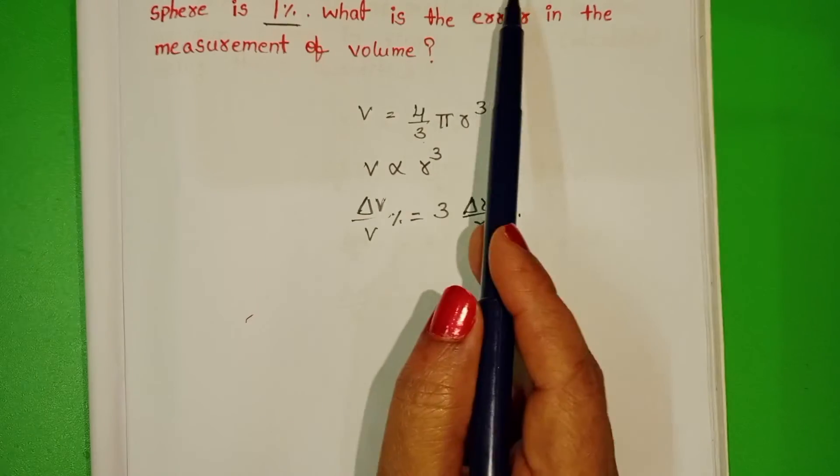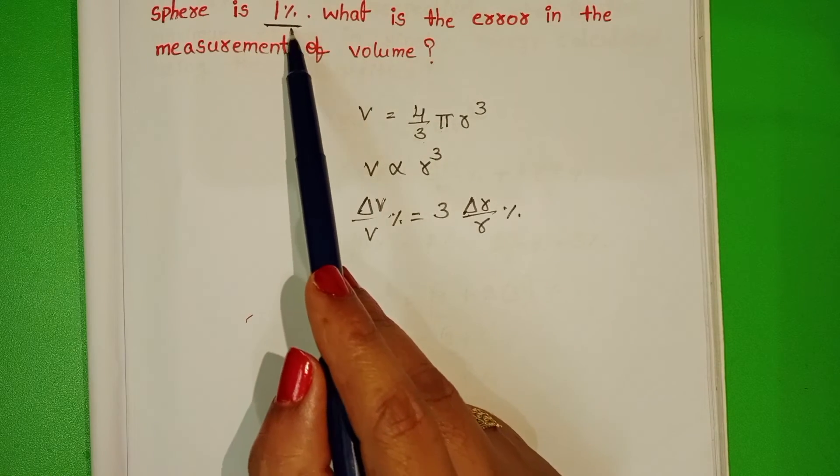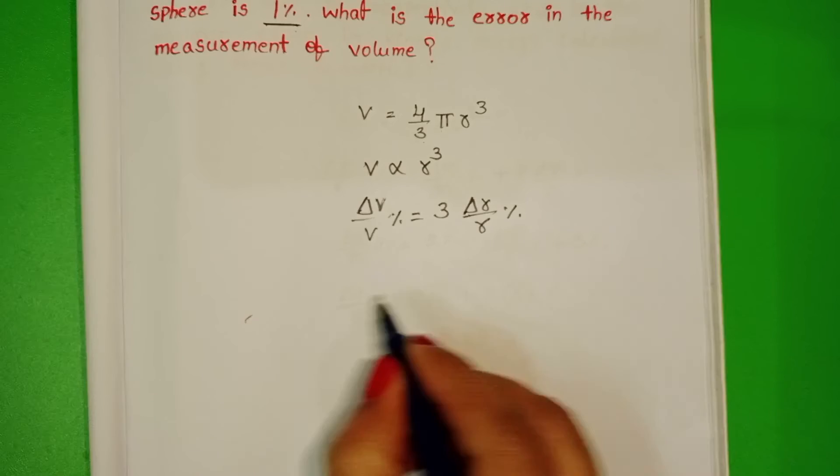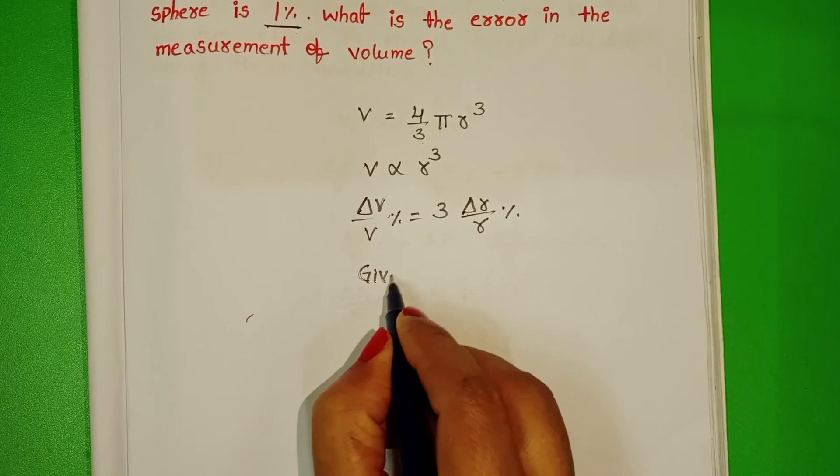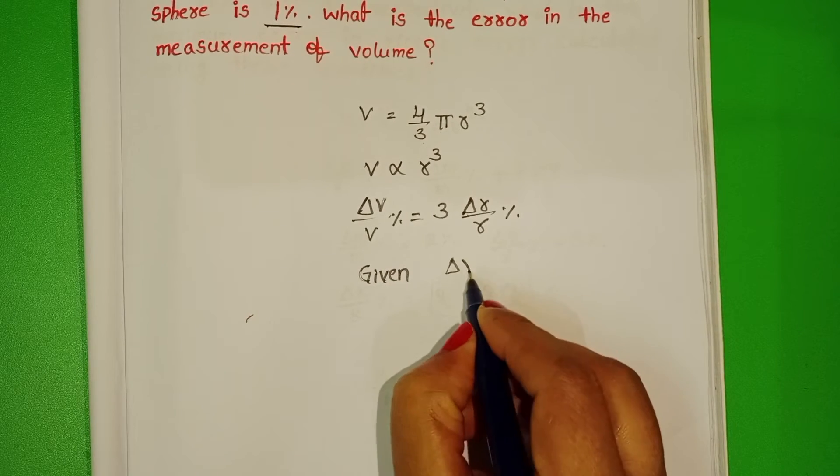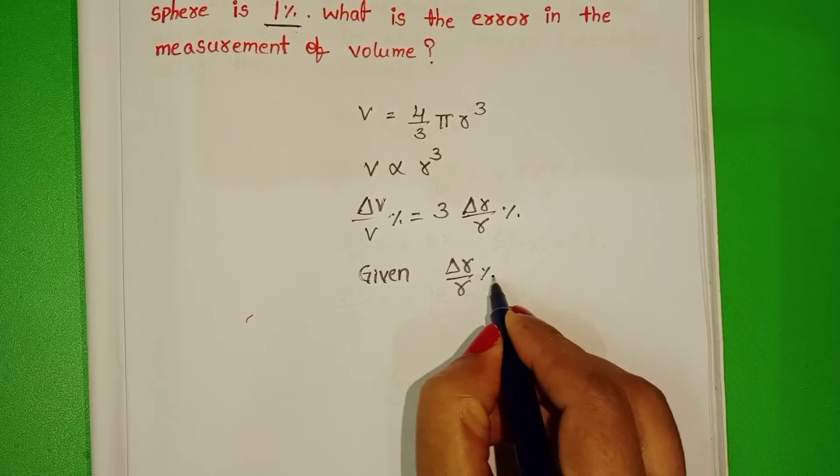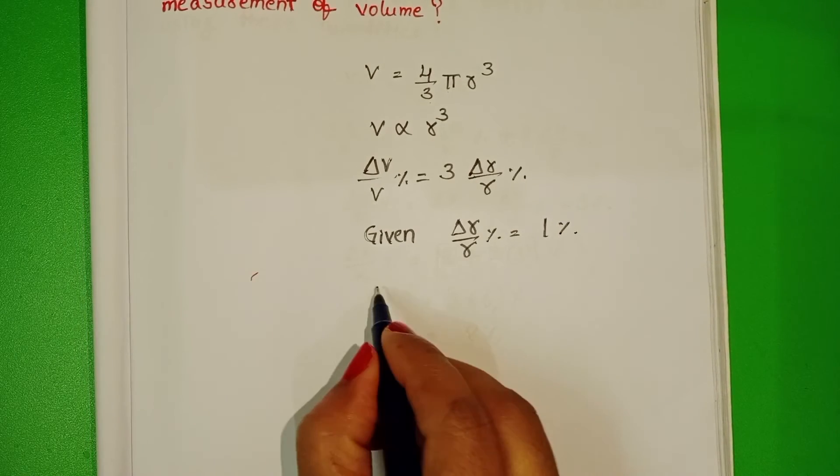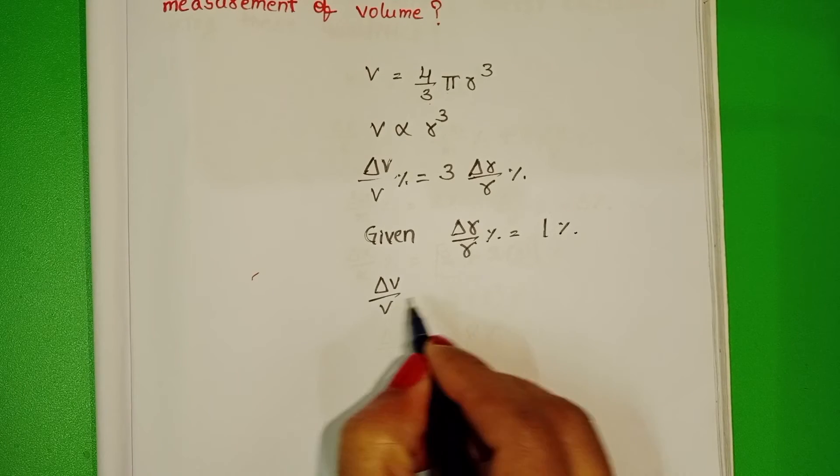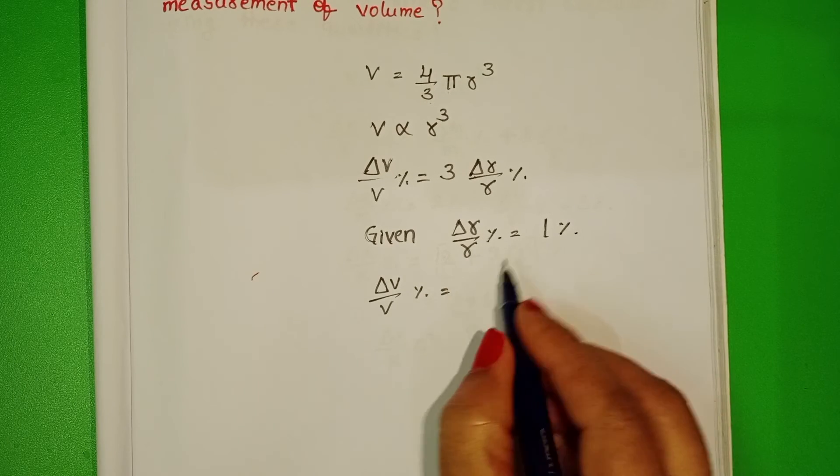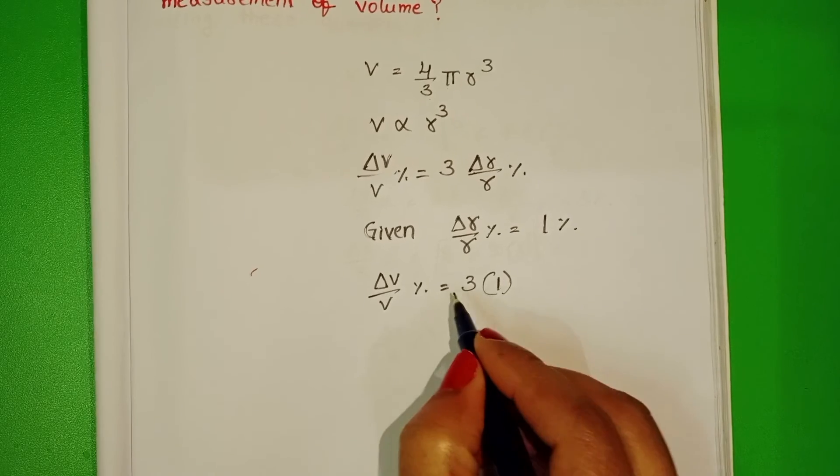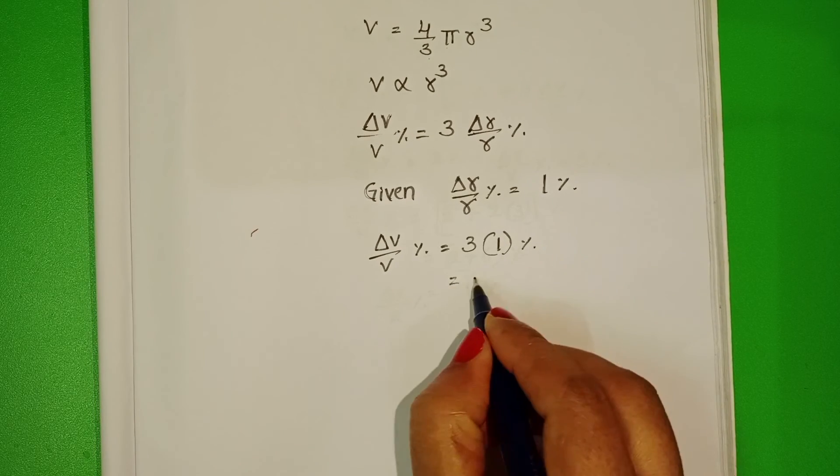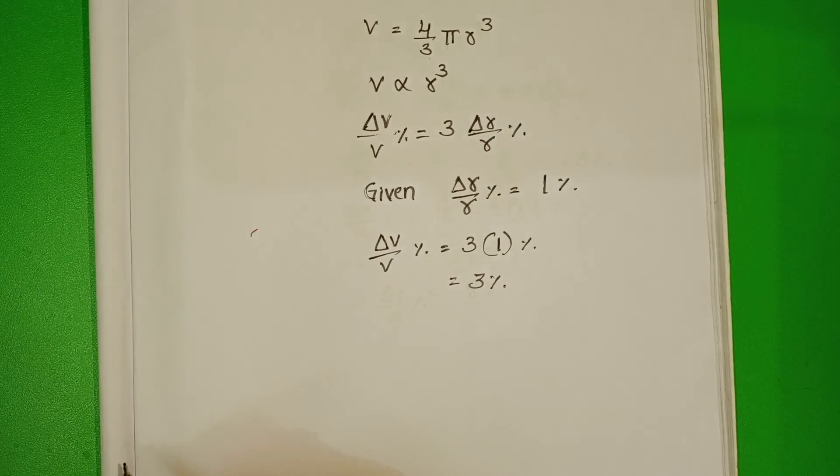Given that the error in measurement of radius is 1%, so Δr/r = 1%. Substituting in the formula above, the percentage error in volume is 3 × 1%, which equals 3%.